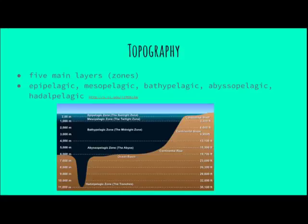There are five main zones of the open ocean. These are the epipelagic, mesopelagic, bathypelagic, abyssopelagic, and hadopelagic.